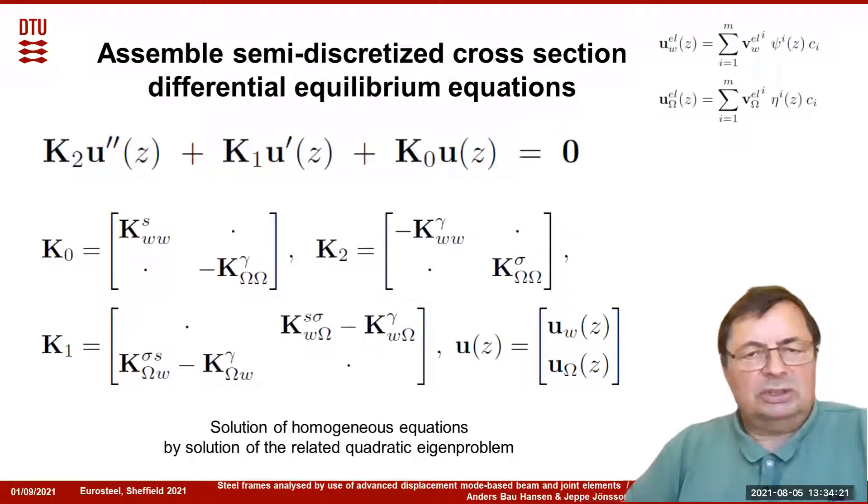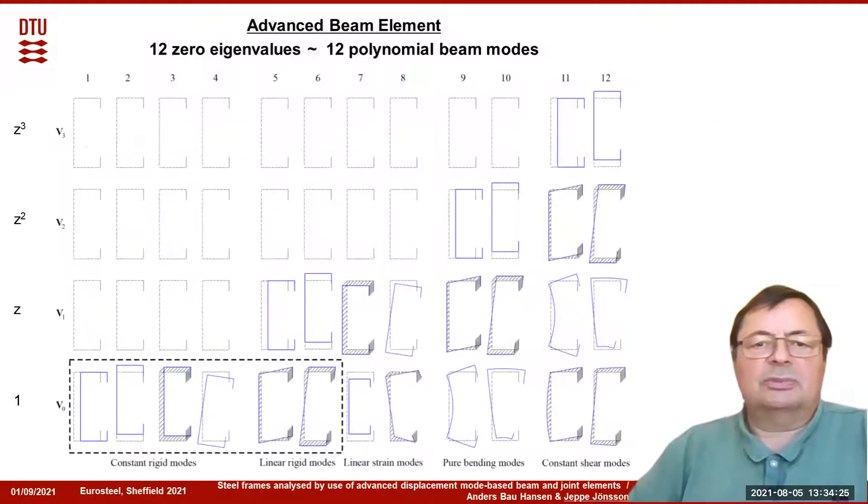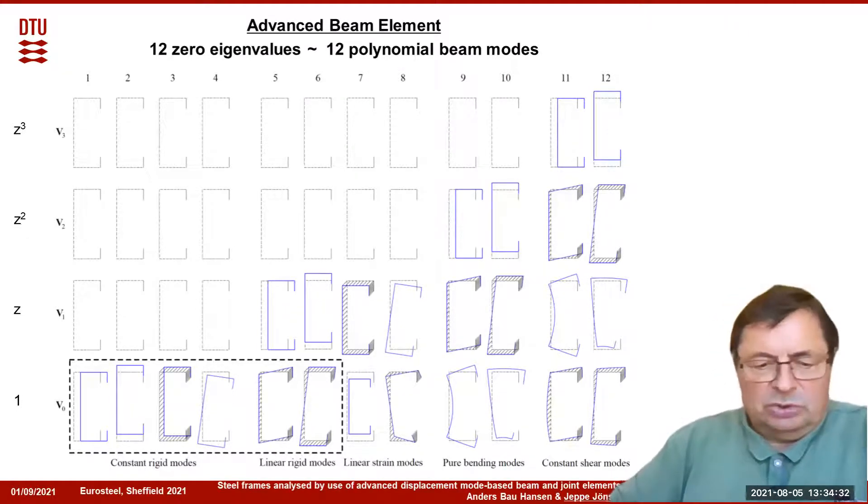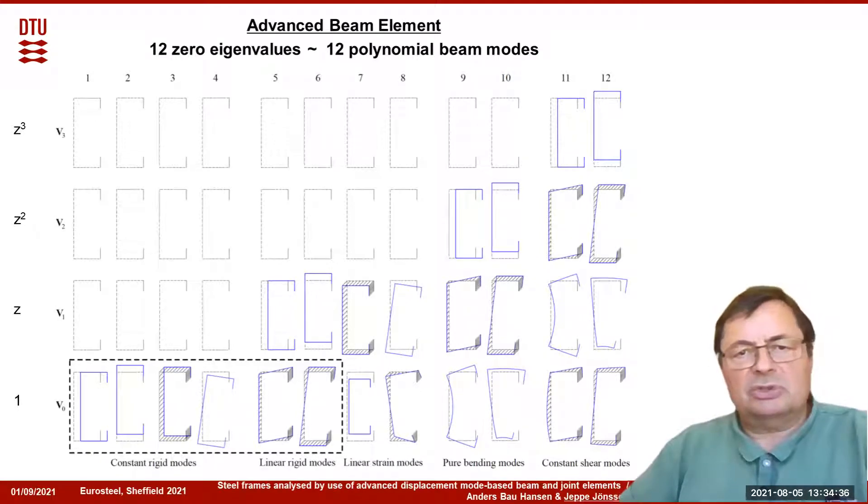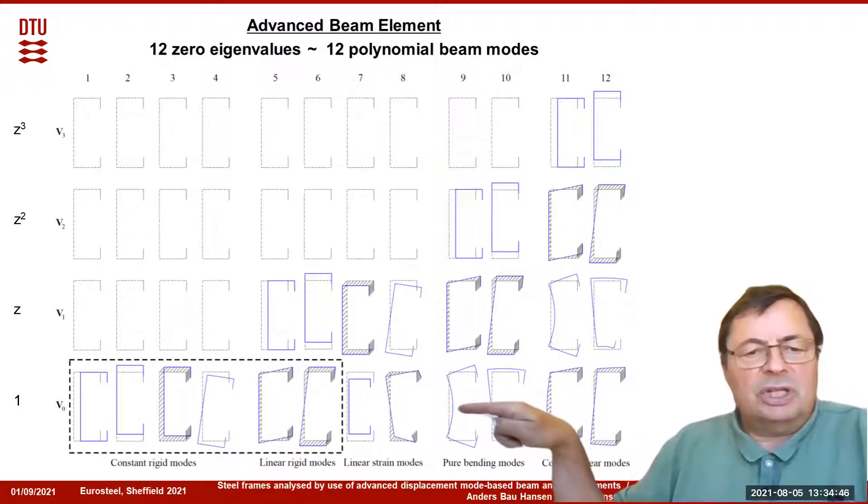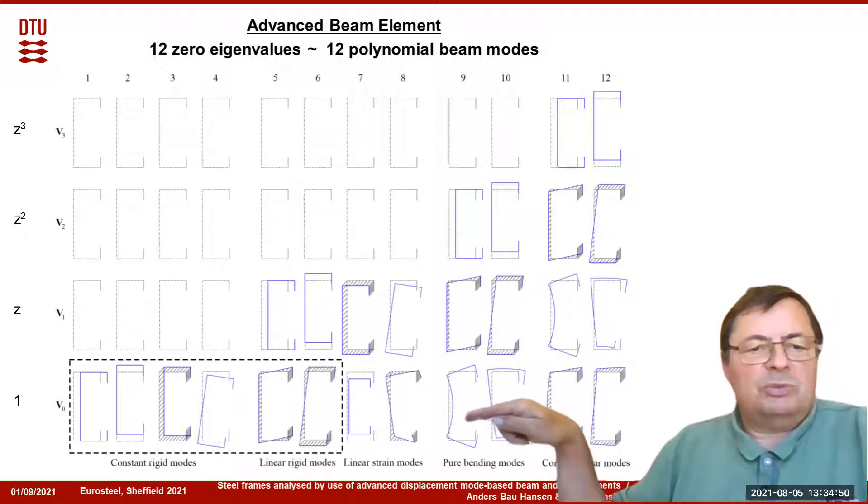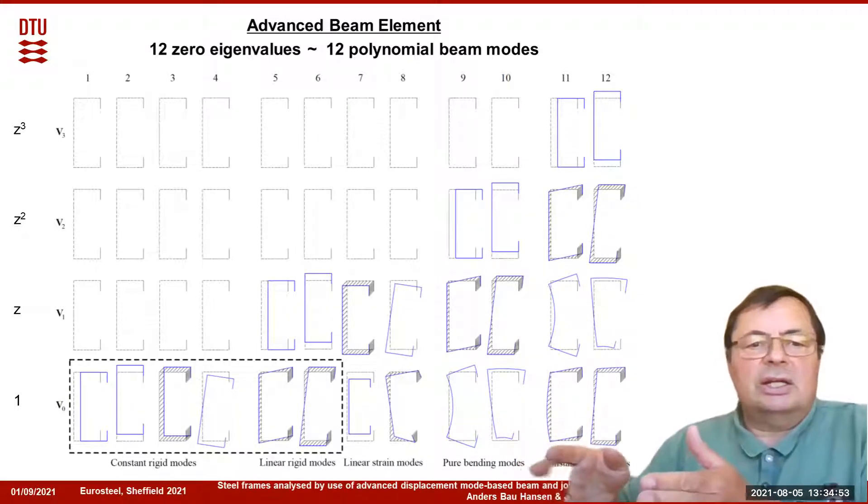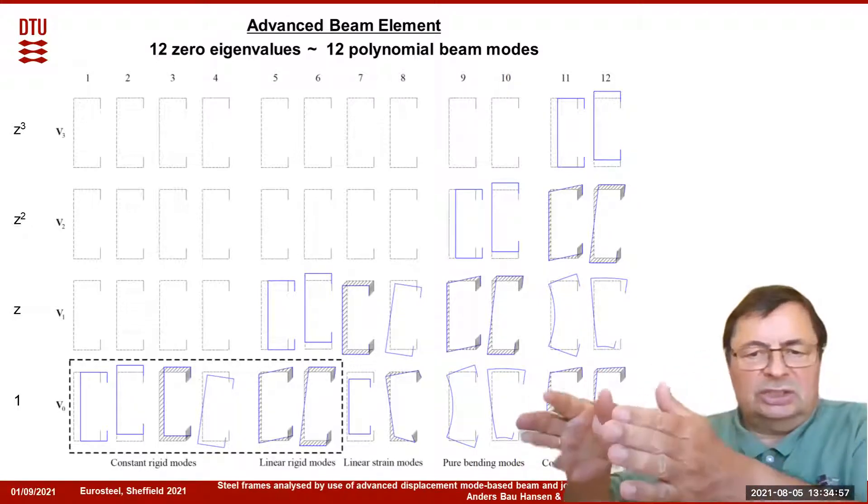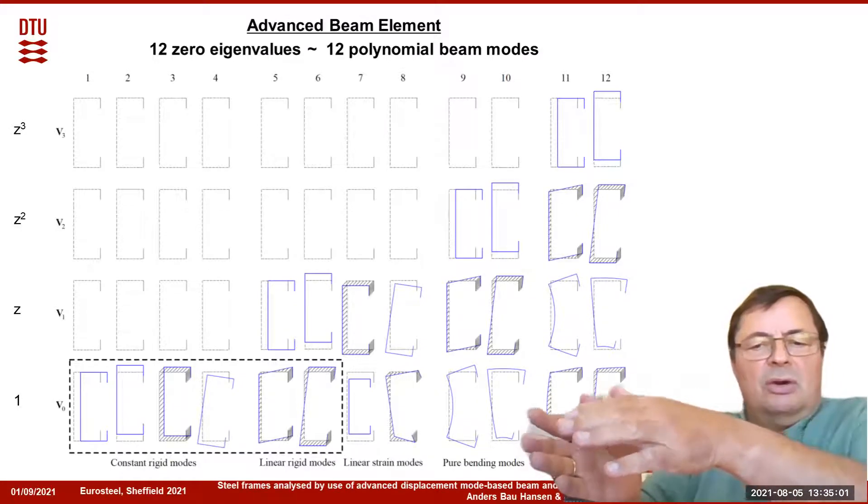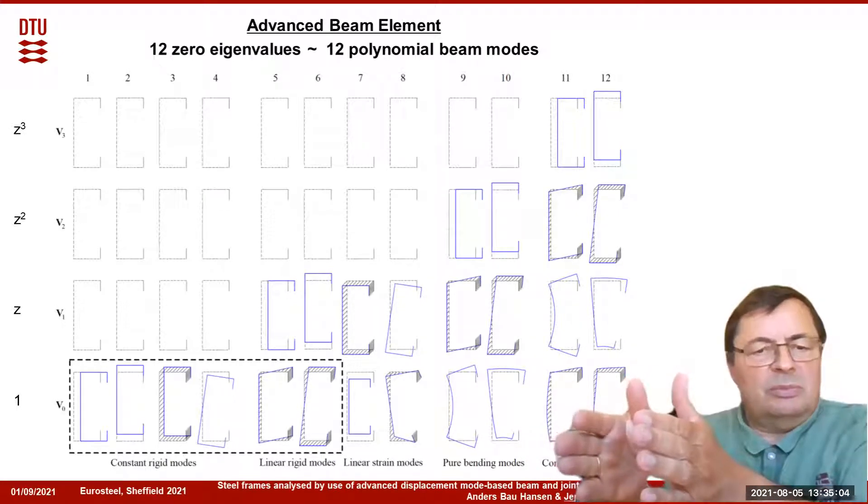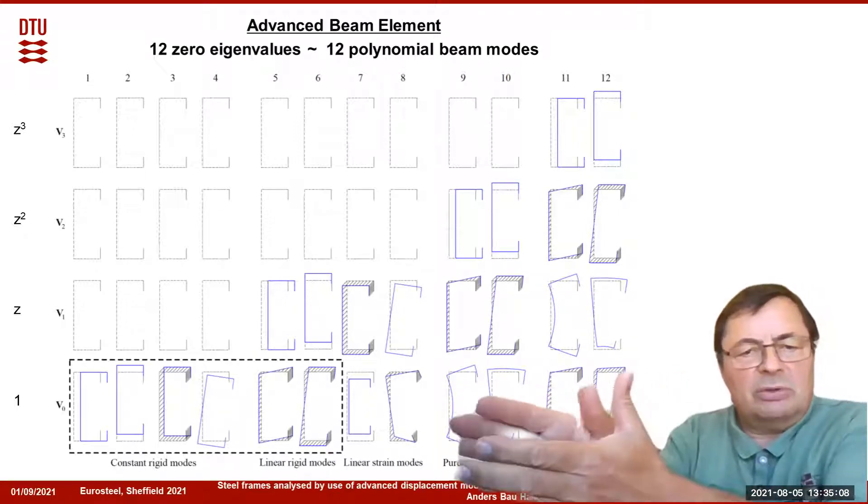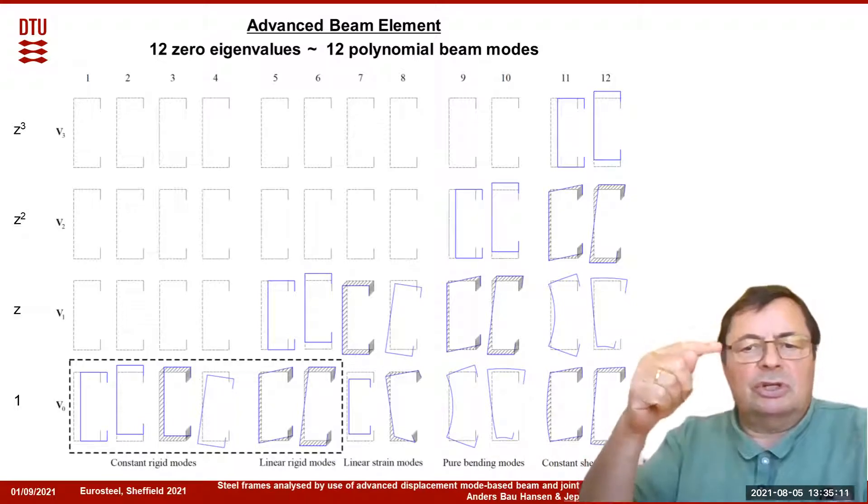We have discretized the cross section, and now we are seeking exact solutions of these differential equations. The eigenvalue problem gives us 12 zero eigenvalues. These correspond to 12 polynomial beam modes. The first six modes shown here to the left are the rigid body modes: translation to one side, translation upwards, extension, pure rotation of the whole beam, and mode 5 is also translation and variation along z, described by the first two lines here.